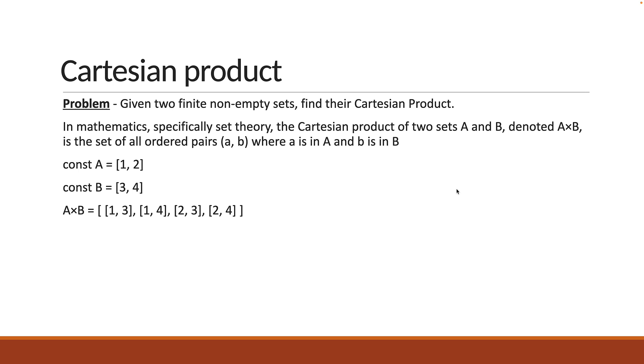Similarly, if we have two sets with elements 1, 2 and 3, 4, 5, the Cartesian product is an array that contains smaller arrays with elements [1, 3], [1, 4], [1, 5], [2, 3], [2, 4], and [2, 5].